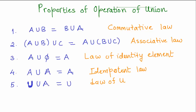In this video we are going to learn about some properties of the operation of union on sets. The first property is the commutative law — that is, the ordering. If you were to combine two sets using the operation of union, it doesn't really matter the order in which you combine them, and this is quite intuitive.